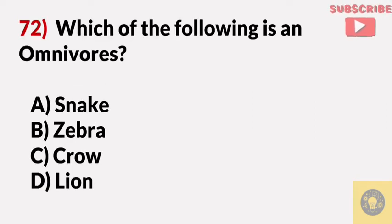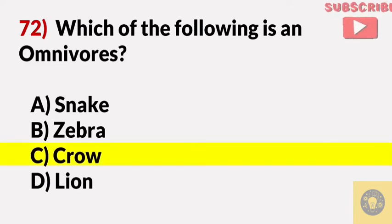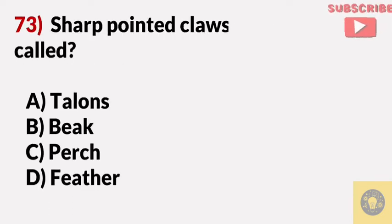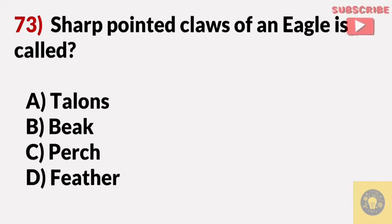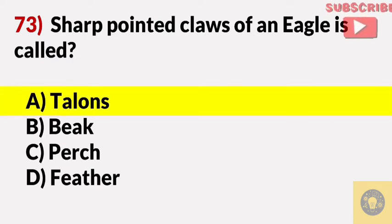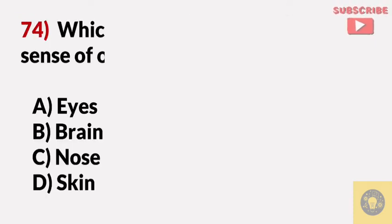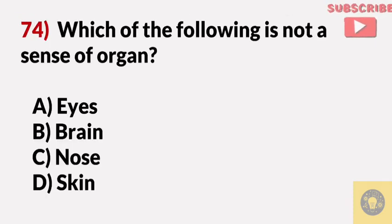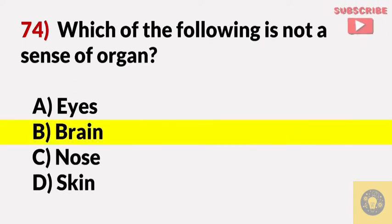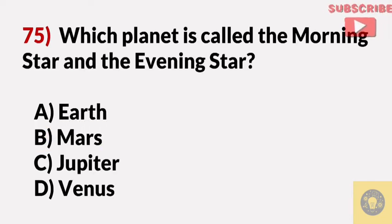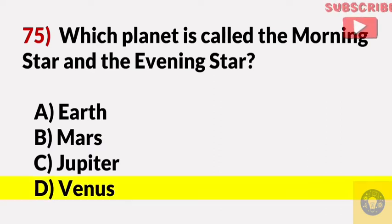Which of the following is an omnivore? Answer C, crow. The sharp pointed claws of an eagle are called? Answer A, talons. Which of the following is not a sense organ? Answer B, brain. Which planet is called the morning star and the evening star? Answer D, Venus.